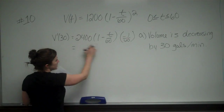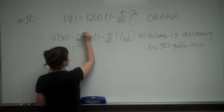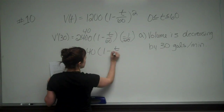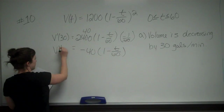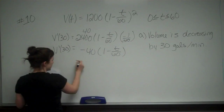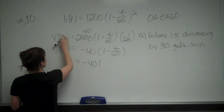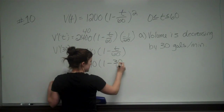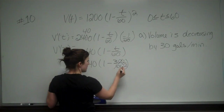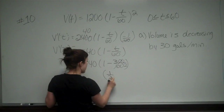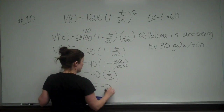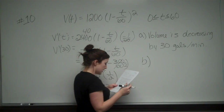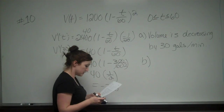Simplifying: 60 goes into 2400 forty times, so V'(T) equals negative 40 times (1 minus T over 60). Plugging in T=30: negative 40 times (1 minus 30 over 60). Since 30 over 60 is one half, that's negative 40 times one half, which equals negative 20. So the rate of change at T=30 is that the volume is decreasing by 20 gallons per minute.